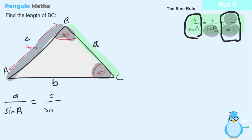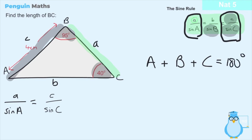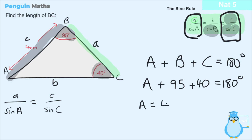We don't know angle A directly, but we were given the other two angles — 95 degrees and 40 degrees. Since all three angles in a triangle must add up to 180 degrees, we can write: angle A plus angle B plus angle C equals 180 degrees, so A plus 95 plus 40 equals 180 degrees. Taking 95 and 40 to the other side gives angle A equals 45 degrees.